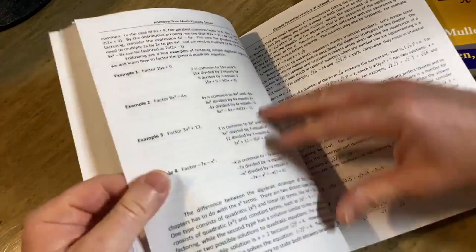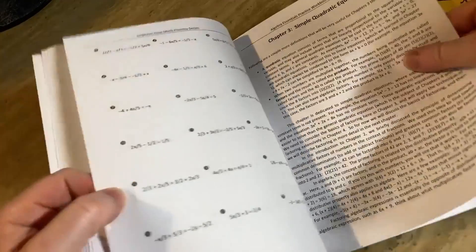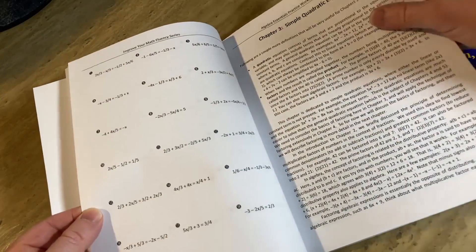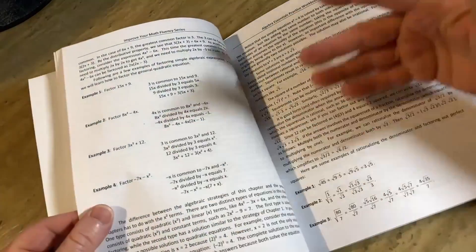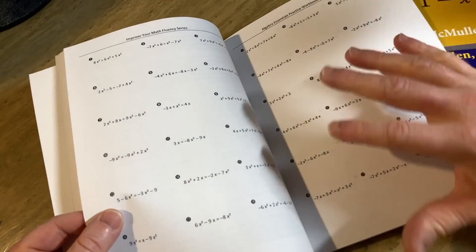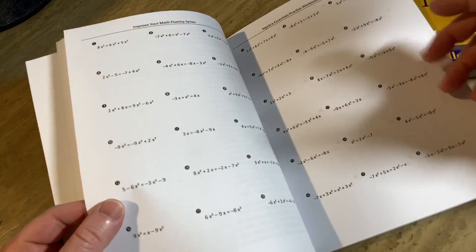So the books, they do explain things. For example, this is on simple quadratic equations, so there's an explanation in each book - it'll teach you the concept, right? So you learn the concept, there's examples, and then you have your workbook you can write in it. You don't have to write in it but it's a choice.